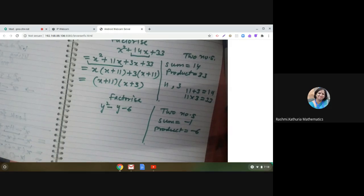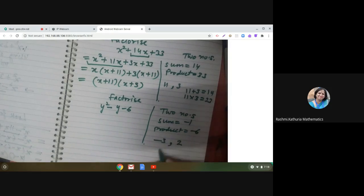Have you got it? Yes, minus 3 and 2. Minus 3 plus 2 is minus 1 and minus 3 into 2 is minus 6.